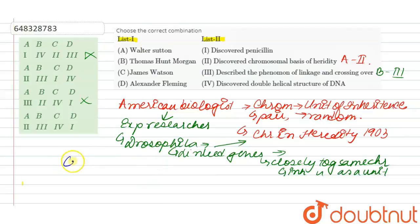So with James Watson, option number 4 is the correct match. From here you can see that option number 2 is incorrect and option number 4 is the correct answer.